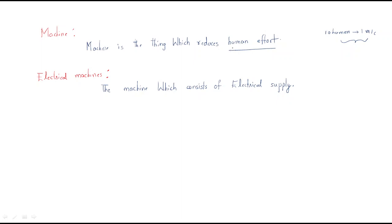A good example is water pumping. In previous days, people would pour water from wells for agriculture. But now, three-phase induction motors are available — simply switching on the supply provides enough water for agriculture. Without machines, we cannot imagine our life.